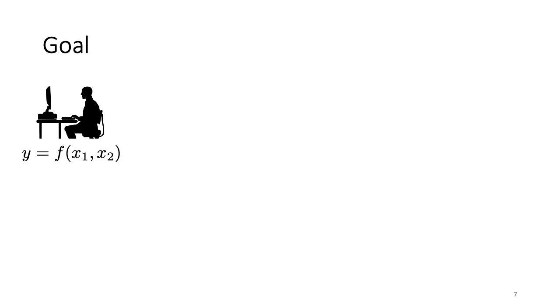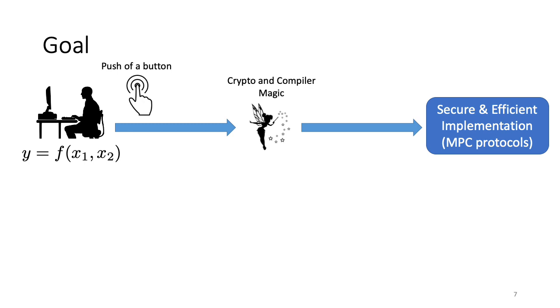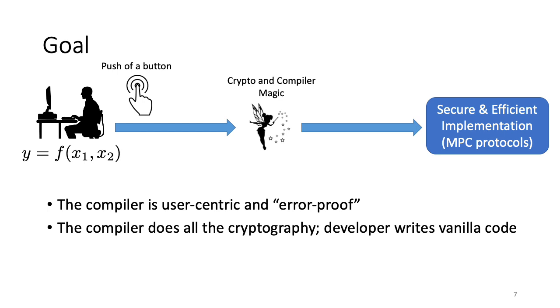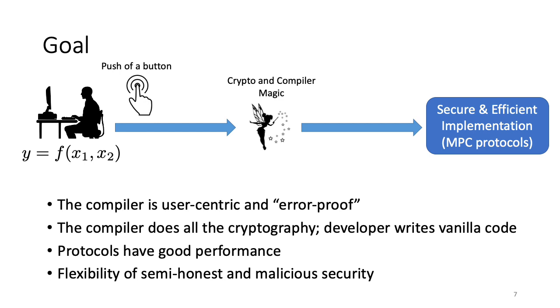Keeping the issues with prior works in mind, we set out with the following goal. Consider a user who is interested in securely computing a function f. Ideally, should only have to express f in its most natural representation and then push a button to get secure and efficient implementation of an MPC protocol for the same using some crypto and compiler magic. For the case of machine learning, one such widely used representation for expressing f is TensorFlow. Let's now look at some important properties that we would like for this compilation to have. Firstly, the compiler should be user-centric and error-proof, meaning that it should prevent the developer from making mistakes that compromise security. On top of that, it should take care of all the cryptographic details so that the developer should just write vanilla code and the compiler can take care of the rest. Finally, we would also like that the protocols output by our compiler have good performance and provide the flexibility of choosing between semi-honest and malicious security.